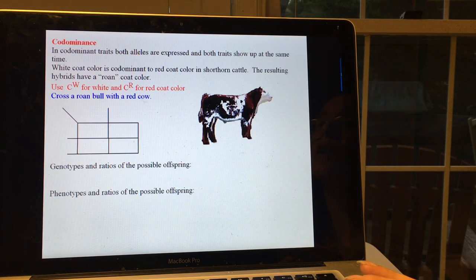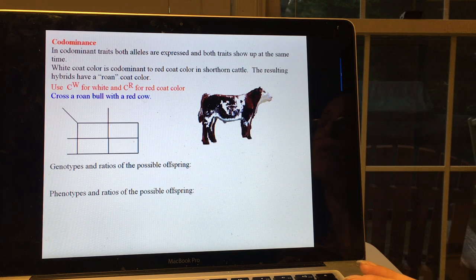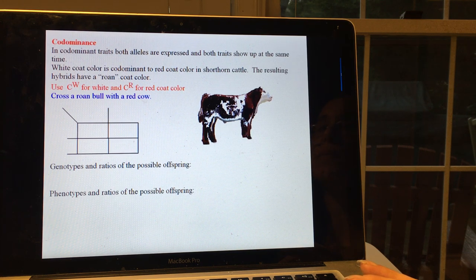In contrast, in codominant traits, both alleles are expressed, so it's not really a blending of the two, but both traits show up at the same time.